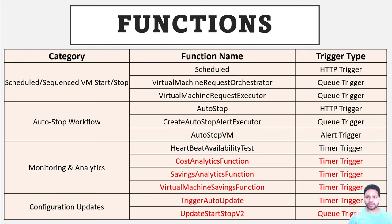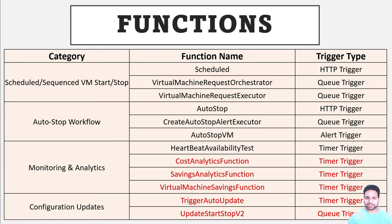When you deploy the solution, a single function app is created; however, there are 12 different functions created within that function app. For the scheduled and sequence VM start/stop, there are three functions: the first is the scheduled function, which is an HTTP trigger triggered by the logic app. The second is the virtual machine request orchestrator, which picks up the message from the queue about which virtual machine needs to be stopped or started. The third is the virtual machine request executor, which actually goes ahead and stops or starts the virtual machine.